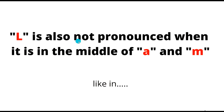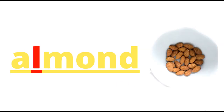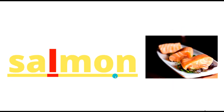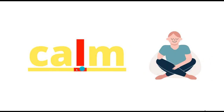L is also not pronounced when it is in the middle of A and M, like in almond. This is A and this is M, and the L is silent — almond. Salmon is a kind of fish and it is known as salmon. Calm — somebody peaceful, it's calm.